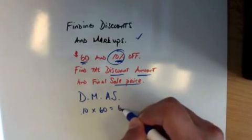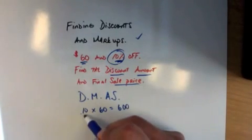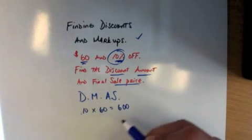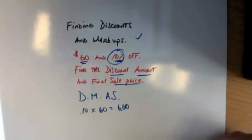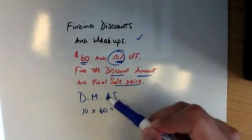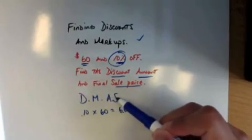10 times 60 is 600. We have two decimal places, so it will be $6. And then A and S - it's either add or subtract.